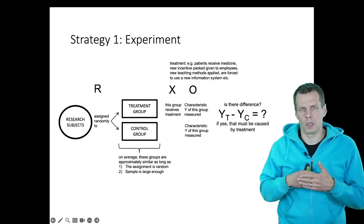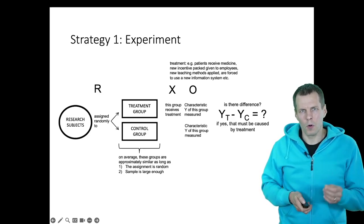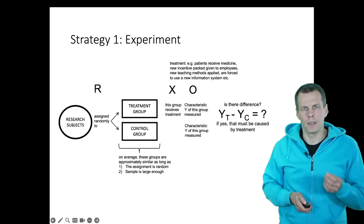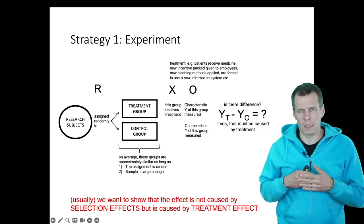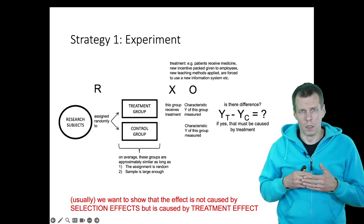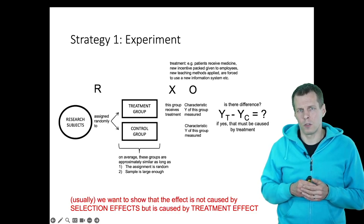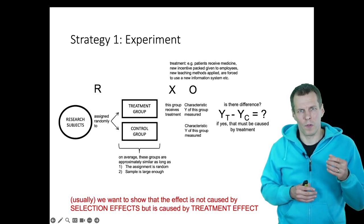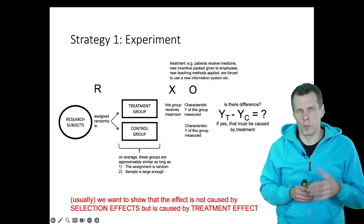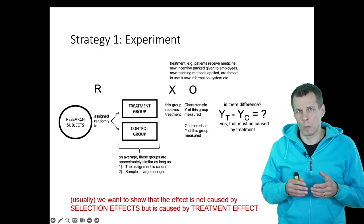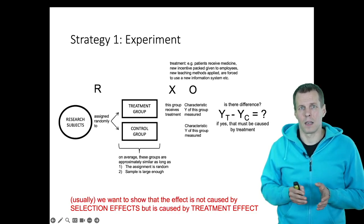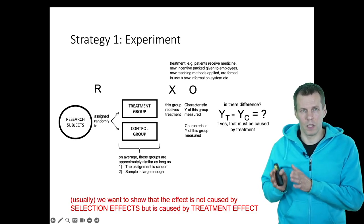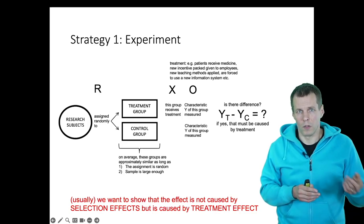Importantly, in experiments we want to ensure that any difference after the experiment is due to the treatment, not due to how companies were assigned. If companies get to choose their CEOs, certain companies that would be more profitable anyway might hire a woman CEO, and others that would be less profitable might hire a man CEO. Then we can't tell whether the difference is the treatment effect or a selection effect.